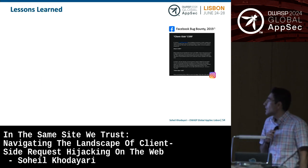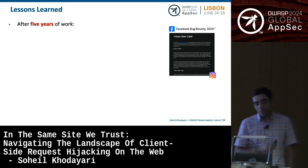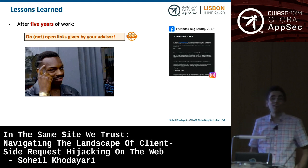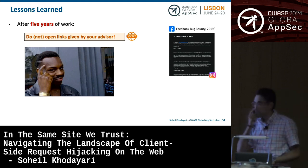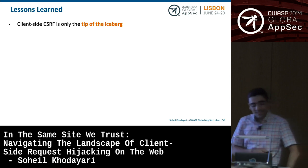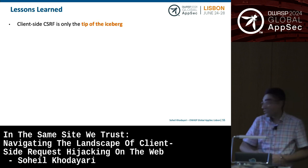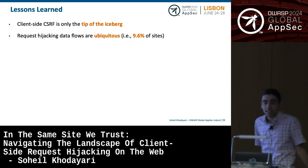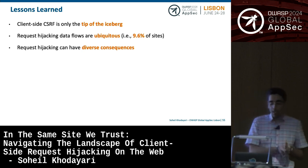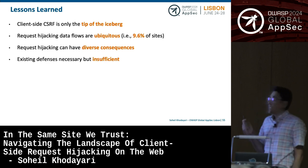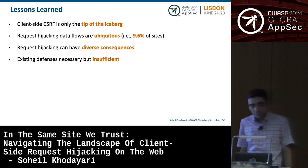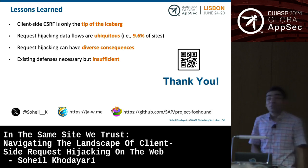So what did we learn after roughly five years of work on request hijacking? First — don't open links sent by your advisor, or you'll spend five years on it. But jokes aside: client-side CSRF is only one instance of the larger issue of request hijacking — just the tip of the iceberg. It affects 9.6% of sites, is ubiquitous on the web platform, has diverse consequences beyond CSRF — including information leakage and open redirection — and existing defenses are necessary but insufficient. You must add extra layers of defense-in-depth to lower the risk of exploitation. Thank you for your attention.